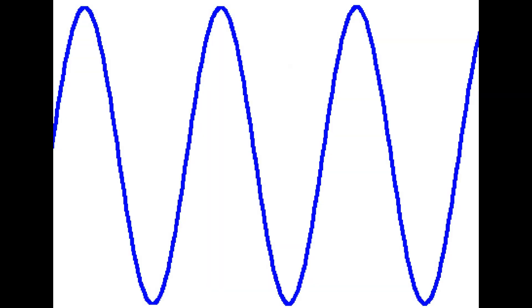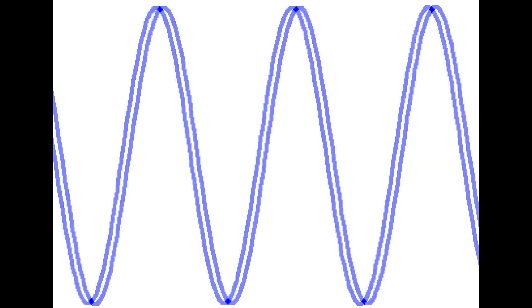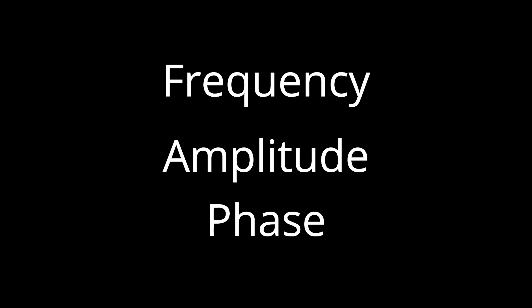Generally, when we describe a signal, we talk about its three important characteristics: frequency, amplitude and phase.